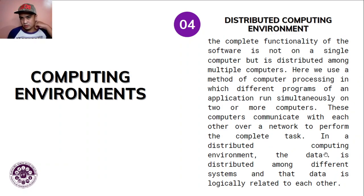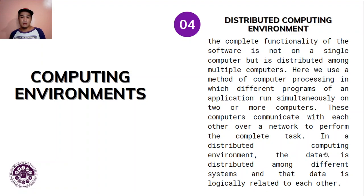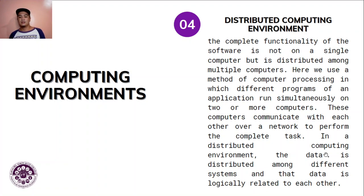In a distributed computing environment, the complete functionality of the software is not on a single computer but is distributed among multiple computers. Different programs of an application run simultaneously on two or more computers, communicating over a network. The data is distributed among different systems and logically related to each other, like a typical business network where two or more computers work together to perform a single task.